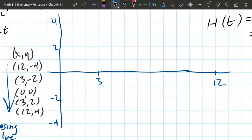All right, first point, (12, -4). That's down here in the lower right. (3, -2), over three, down two, right here. And (0, 0), that's the origin.